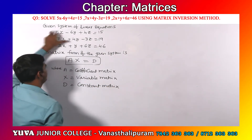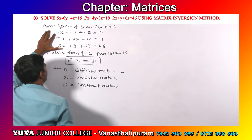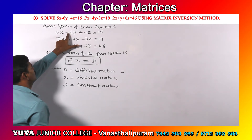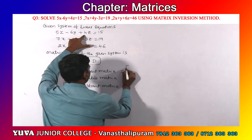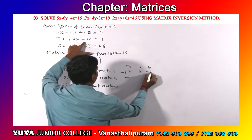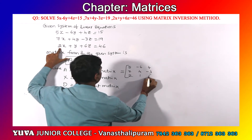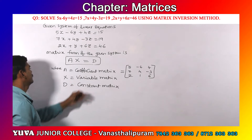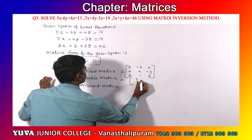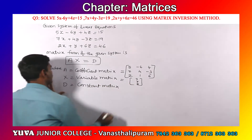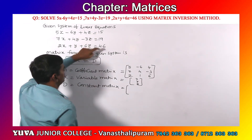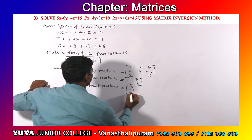By looking at the given equations, we can write these matrices. The coefficient matrix is written using the coefficients of x, y, z — do not forget to write the signs. First row: 5, minus 6, 4. Second row: 7, 4, minus 3. Third row: 2, 1, 6. The variable matrix is a column matrix containing x, y, z. The constant matrix contains 15, 19, 46.